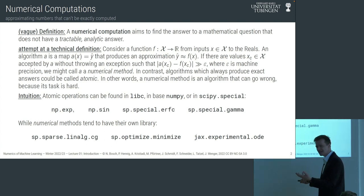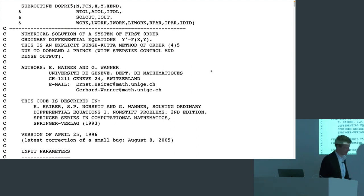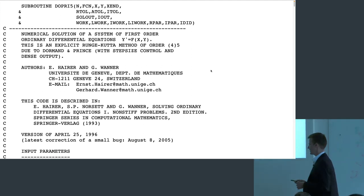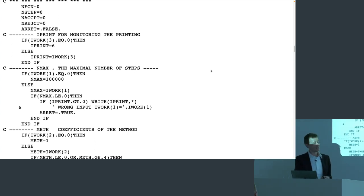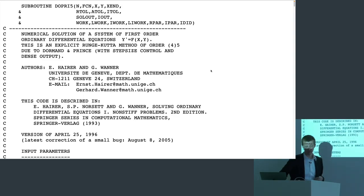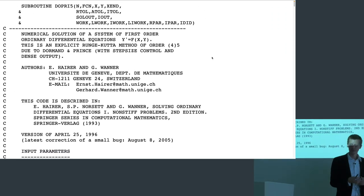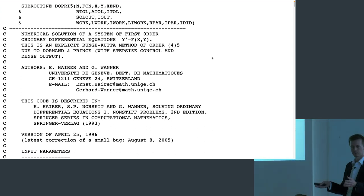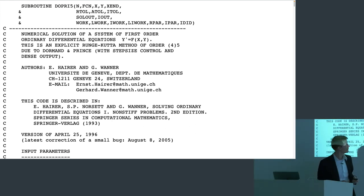What do these algorithms actually look like? Here is a prototypical numerical algorithm — it's on the internet. First, can someone guess what kind of programming language this is? It's Fortran — actually Fortran 95, which you can tell from the indentation style. This algorithm was written in 1993 by a Swiss developer in Geneva, and it implements an algorithm invented by Dormand and Prince around 1975.